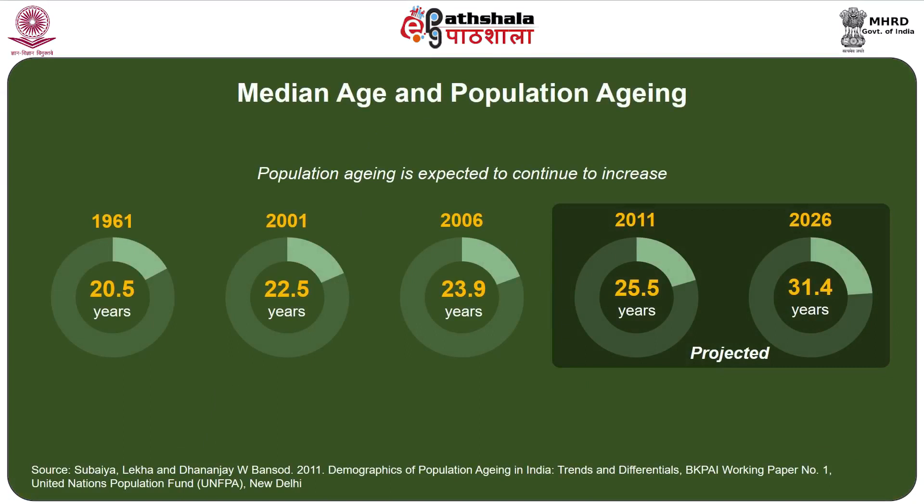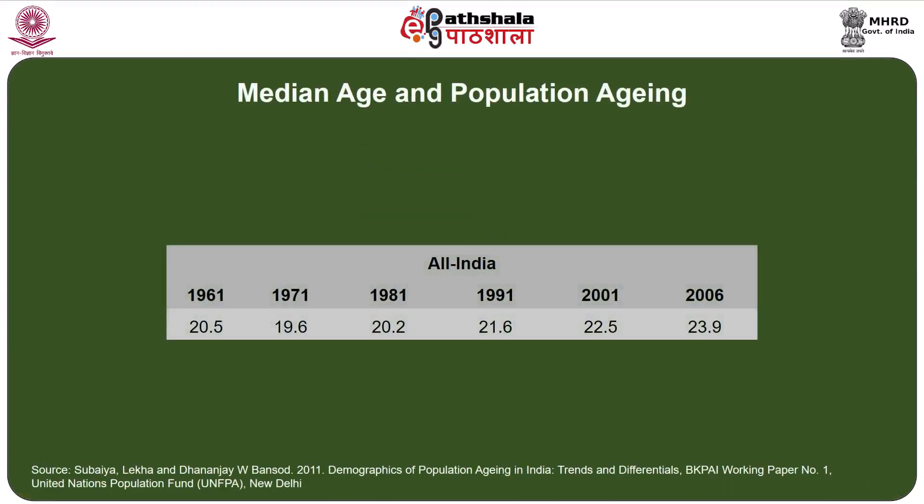One of the indicators for assessing population aging is through median age. The median age was as low as 20.5 years in 1961, steadily increased to 22.5 years in 2001, and was 23.59 in 2006. Projected data shows it was 25.5 years in 2011 and is expected to further increase to 31.4 years by 2026. This clearly indicates that population aging is here to stay, and successful demographic transition, which brought down vital events, has also shown its influence on median age and the resultant aging of our population.